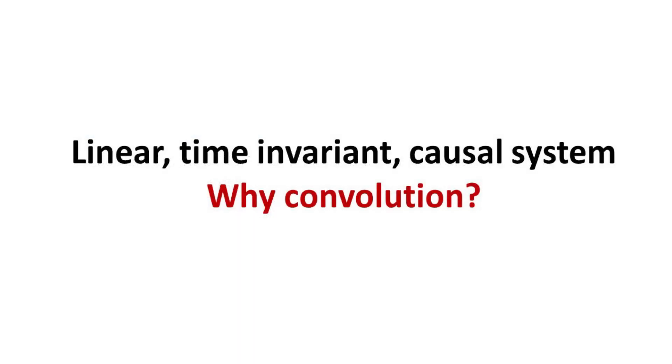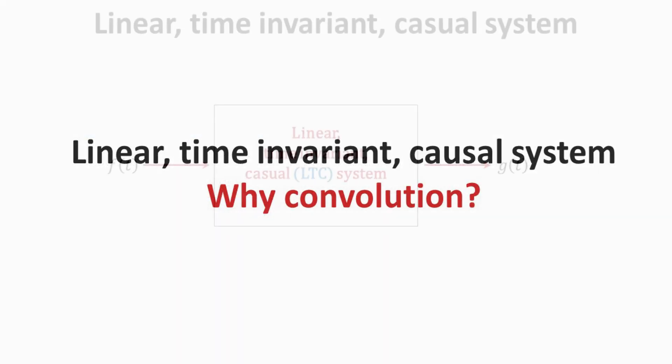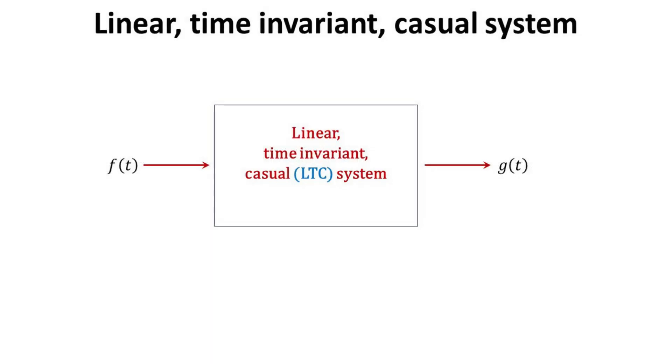Part 1. Linear Time-Invariant Causal System: Why convolution? We are interested in the model for a linear, time-invariant and causal system, or LTC system for short. That is quite a mouthful, and we shall explain what they mean. First off, let's denote the input to our system as Ft and output as Gt.